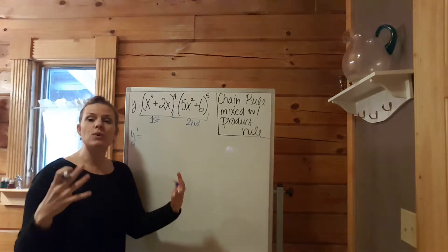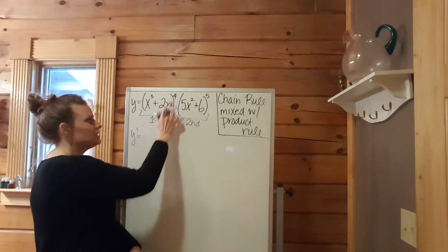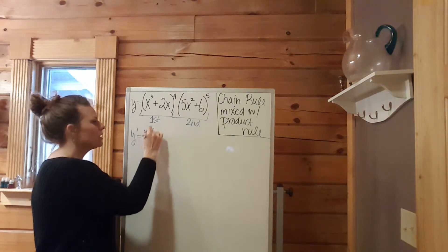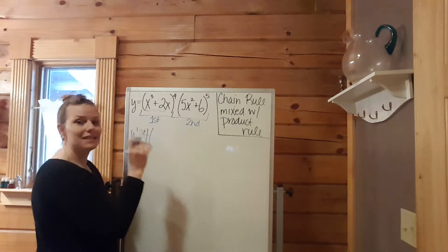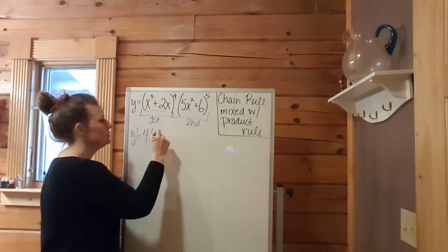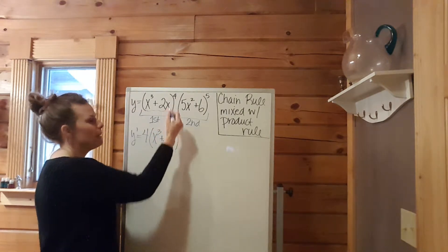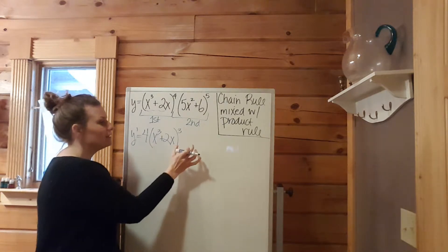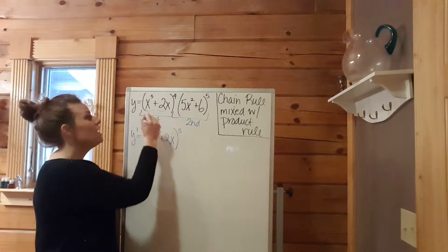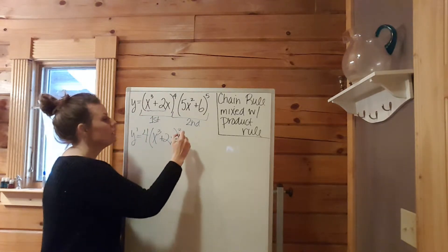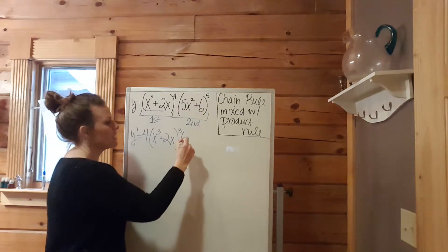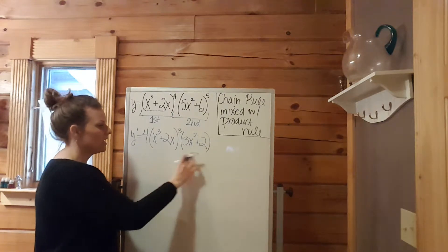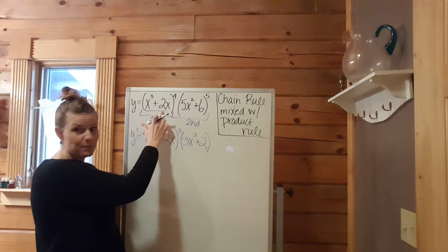The chain rule, we always work from the outside in. Taking the derivative of the first, using the chain rule, means the four comes down in front, the inside stays exactly the same, (x³ + 2x). The power becomes a 3, and then the chain rule says we link on, or multiply by, the derivative of that inside. So the derivative of this inside is 3x² + 2. This whole thing is just the derivative of the first.